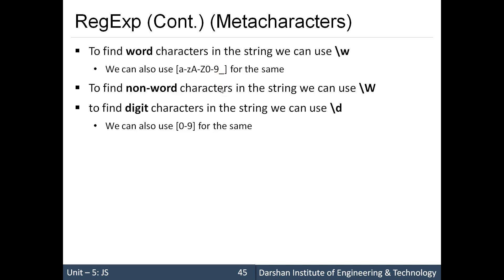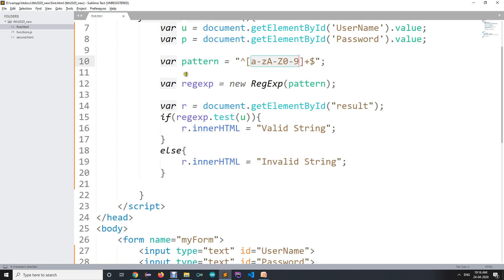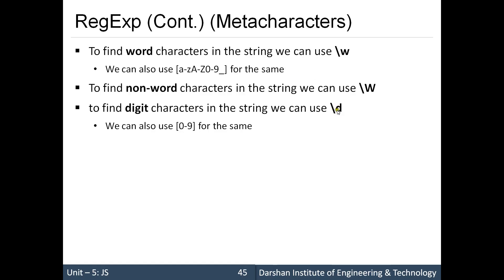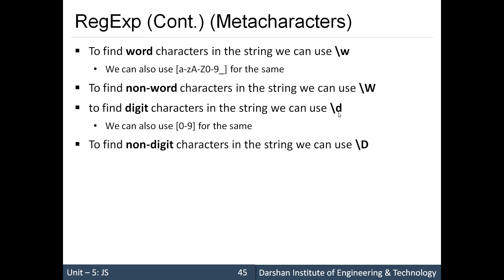If you want to allow only digits 0–9, you can write [0-9] in the square bracket syntax, or equivalently use \d — both are the same. To allow non-digits (anything other than 0–9), use capital \D. You can also use \s for whitespace, \t for tab, and \n for newline.